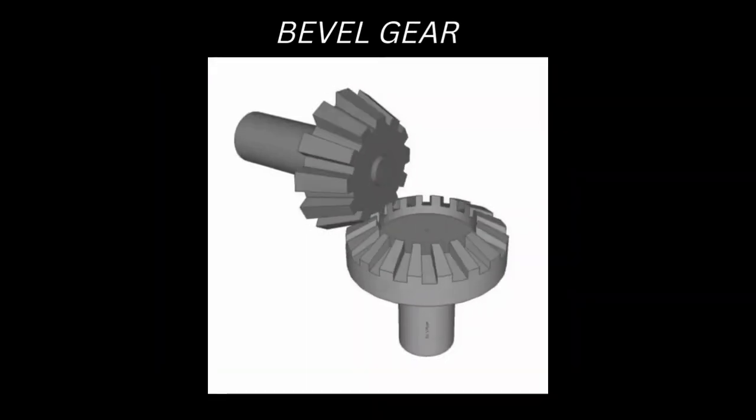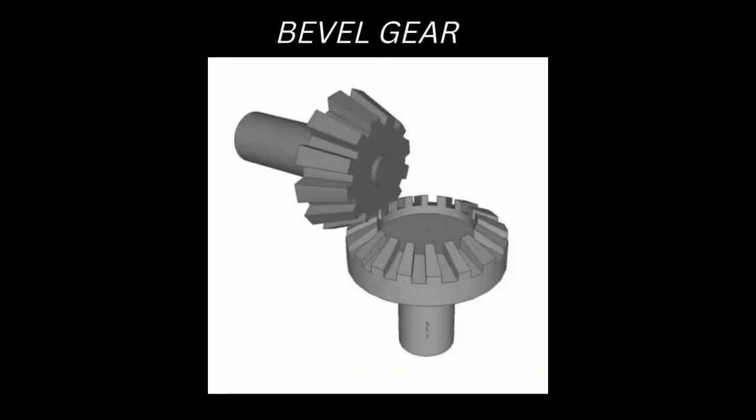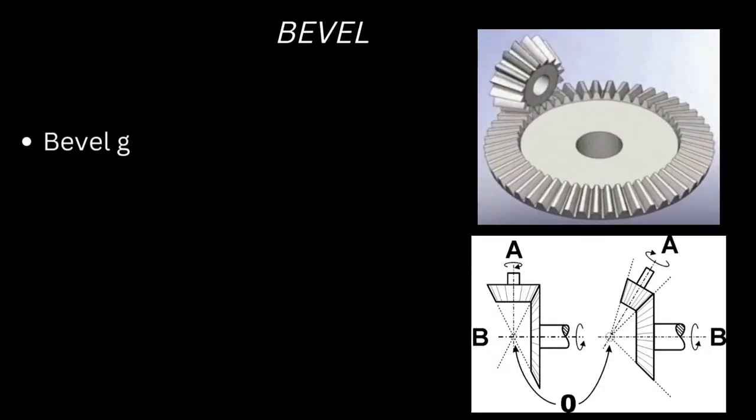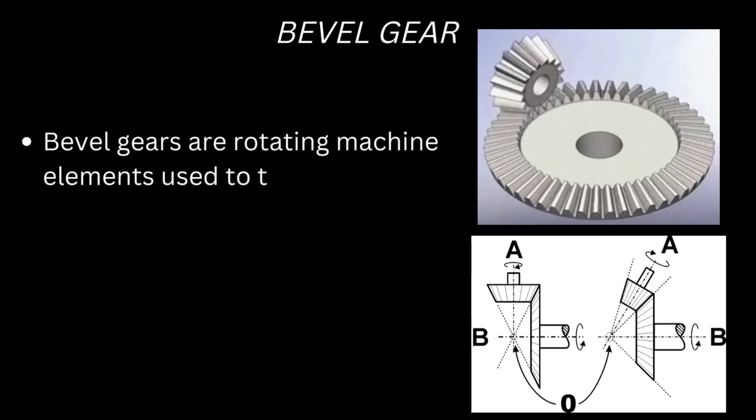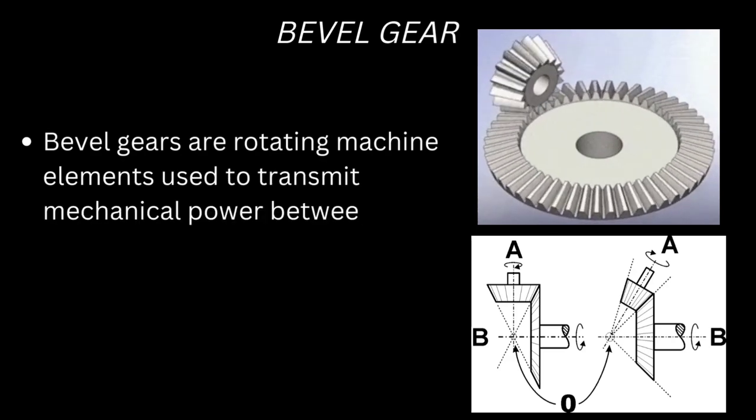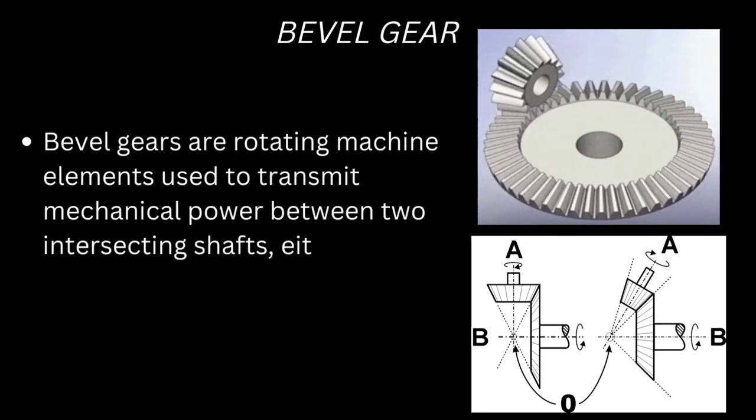Bevel gears are rotating machine elements used to transmit mechanical power between two intersecting shafts, either perpendicular or at an angle.